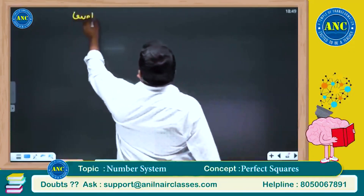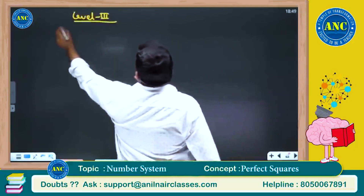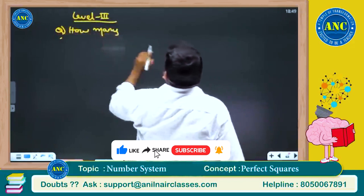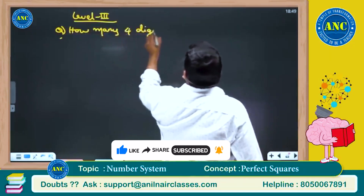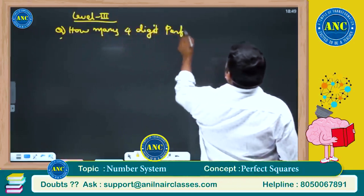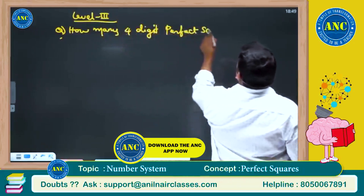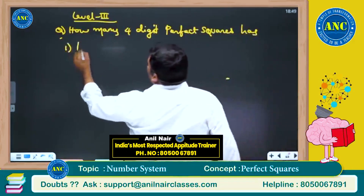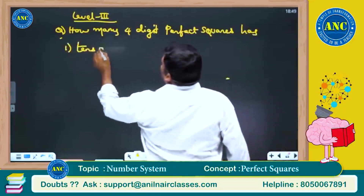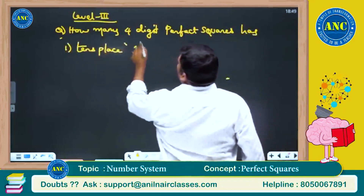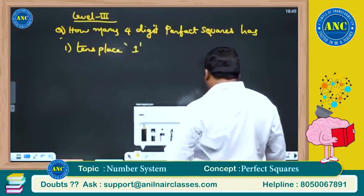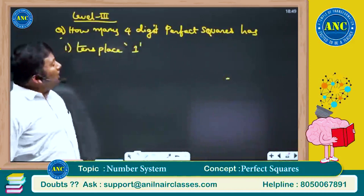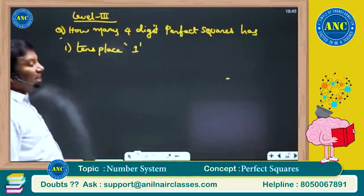Level 3 question. How many 4-digit perfect squares have the tens place equal to 1? This is the first question — beautiful question.